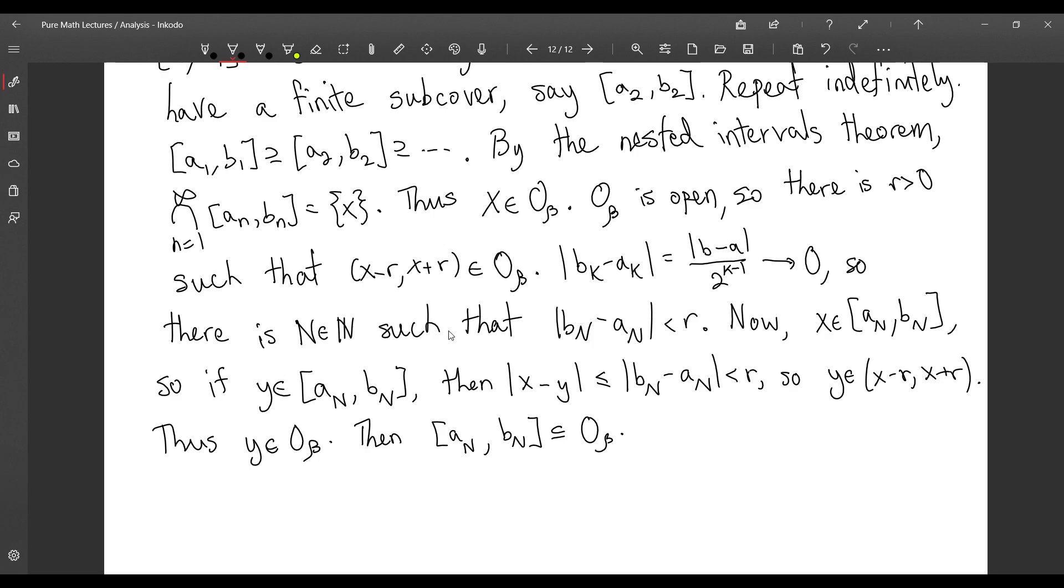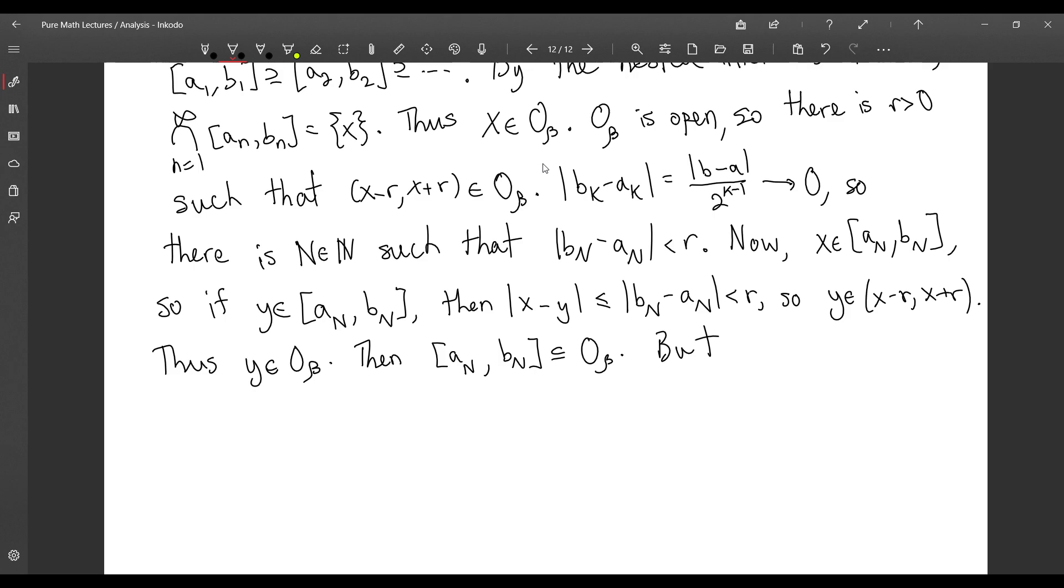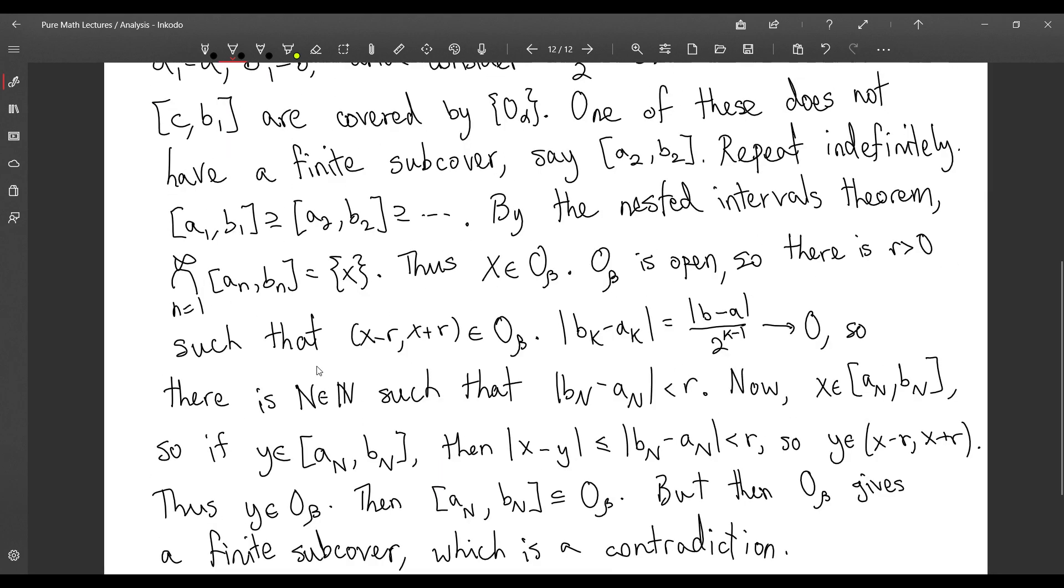Now, why is this a problem? We said that each A sub-N, B sub-N interval cannot have a finite subcover. But we just found a finite subcover given by a single open set. But then O sub-Beta gives a finite subcover, which is a contradiction. This contradicts our assumption that the A sub-N intervals cannot have a finite subcover.